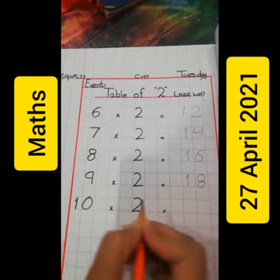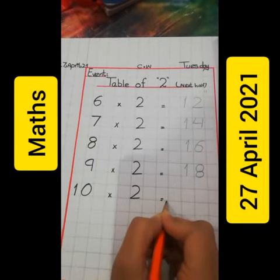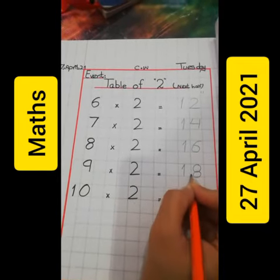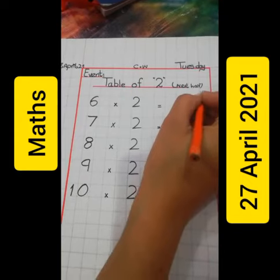And the last one is ten times two: eighteen, nineteen, twenty. Ten times two is twenty.